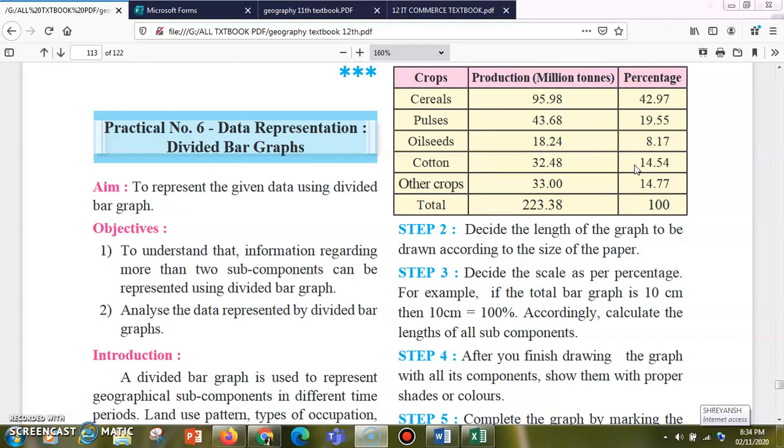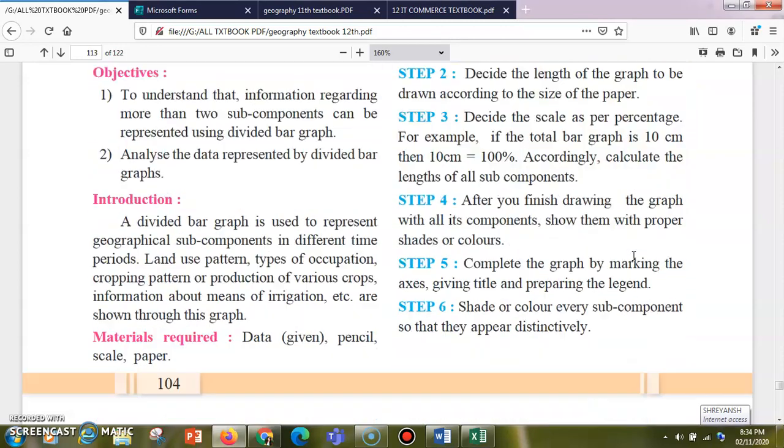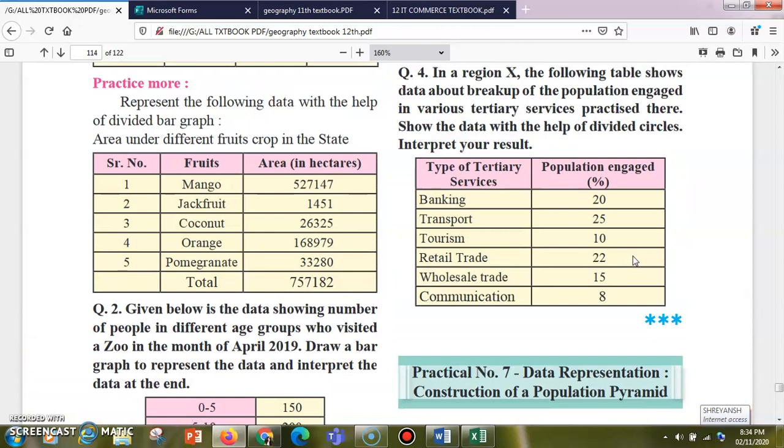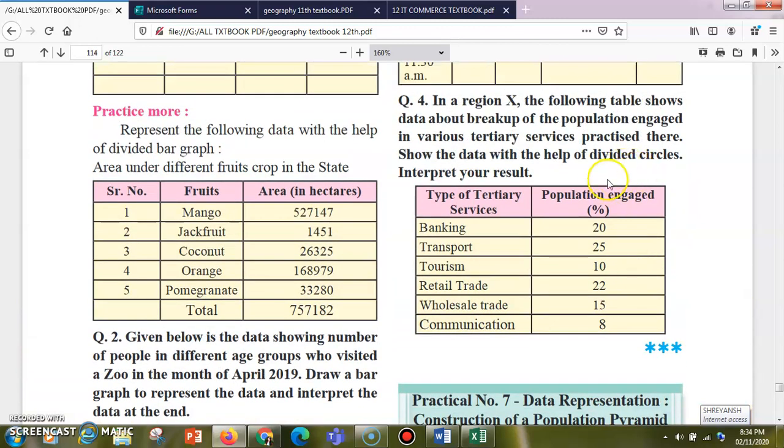Let us solve Example Number 4. The first three examples are already solved in the first video. In Example Number 4, in a region X, the following table shows the data about breakup of population engaged in various tertiary services practiced there. Show the data with the help of divided circle and interpret your result.